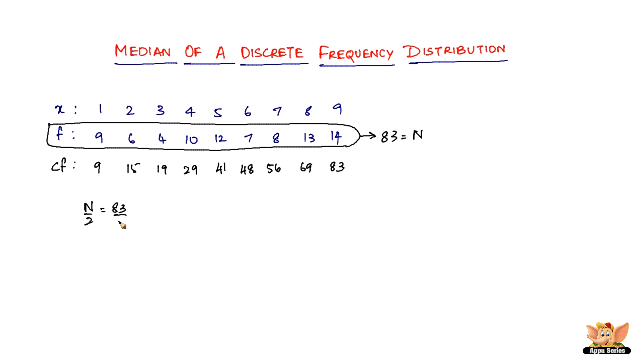In the cumulative frequency, look for the value just greater than 41.5, which is 48 in this case. The variate corresponding to 48 is 6. So, 6 is the median of this frequency distribution. That is how you find the median of a discrete frequency distribution.